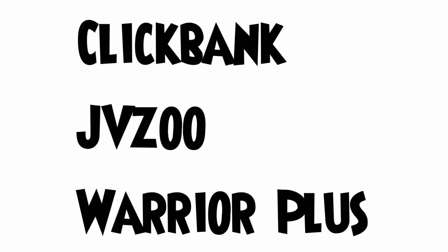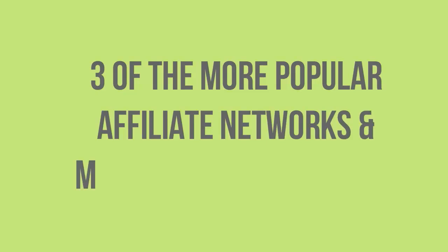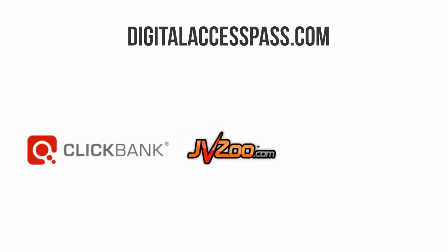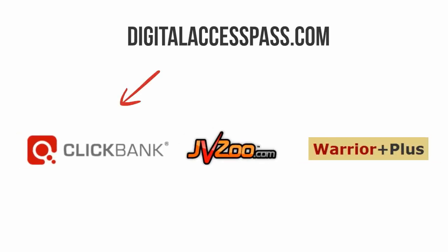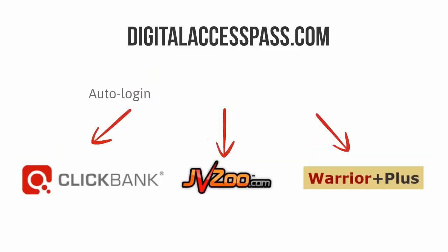Clickbank, JVZoo, and Warrior Plus are three of the most popular affiliate networks and marketplace platforms. Dapp is one of the few plugins to have seamless and unique integration with all three of those platforms. Dapp allows what we call autologin with two of them and it makes it nearly as easy with the third one too.